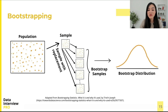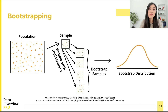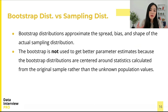To find the bootstrap distribution of the mean, we draw samples of size n with replacement from the original sample and compute the mean of each resample. These samples are called resamples or bootstrap samples — we treat the original sample as the population. Note that drawing bootstrap observations from the original sample is not like drawing from the underlying population, because it does not create new data.